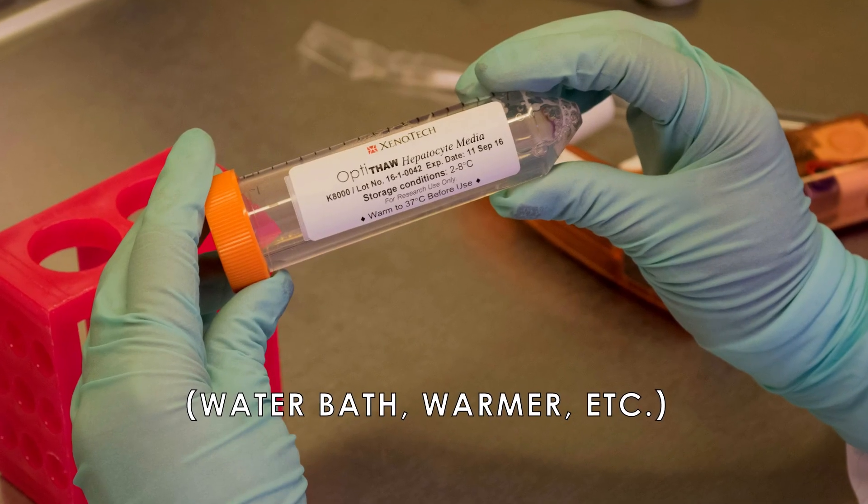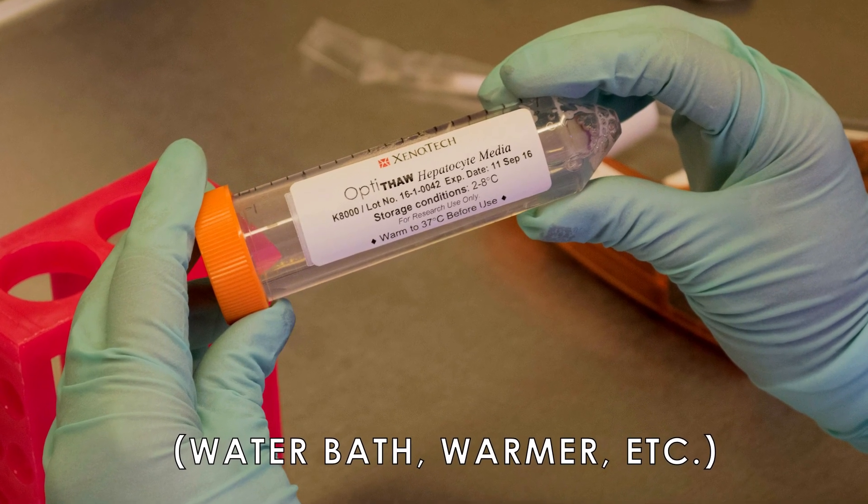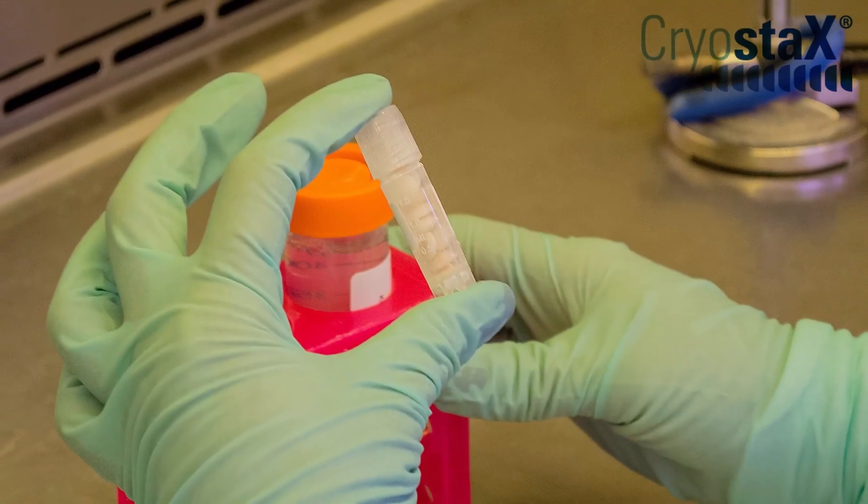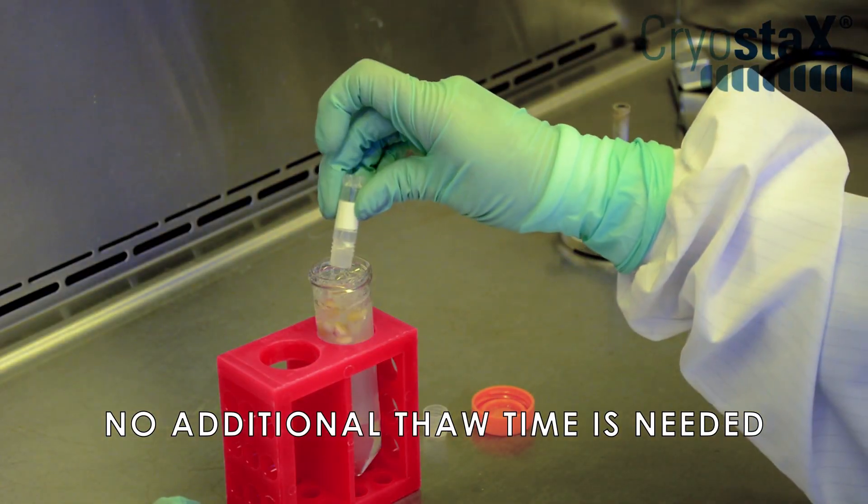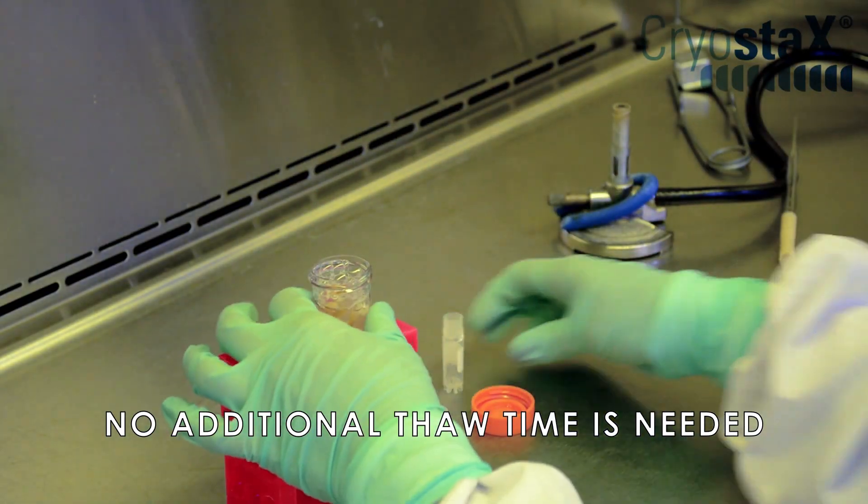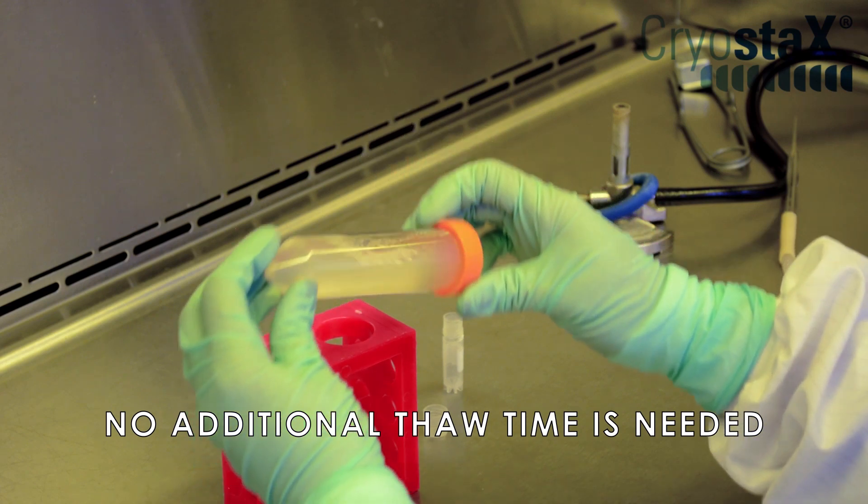Warm the optithaw media tube to 37 degrees Celsius. If you're working with a cryo stacks pool, remove the cryo tube from the liquid nitrogen storage unit and immediately dispense the contents into the pre-warmed optithaw media tube. Gently invert the tube until all the ice is melted.